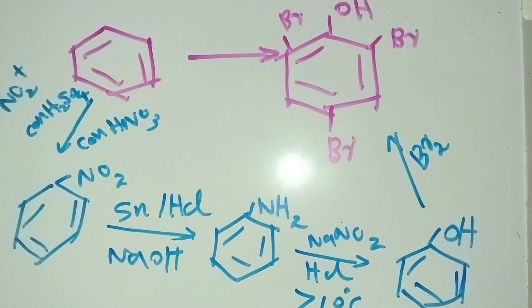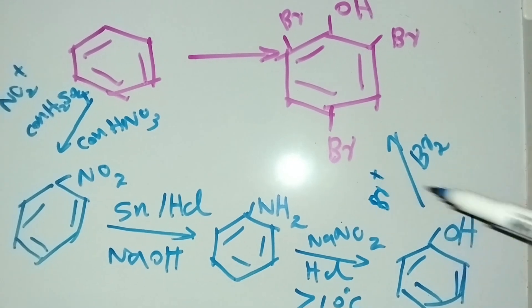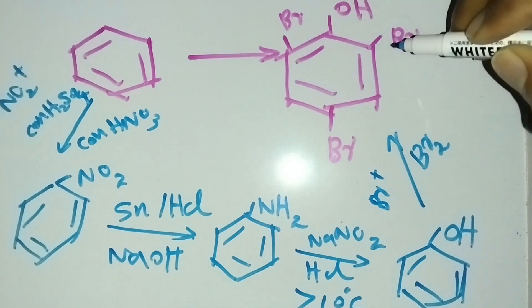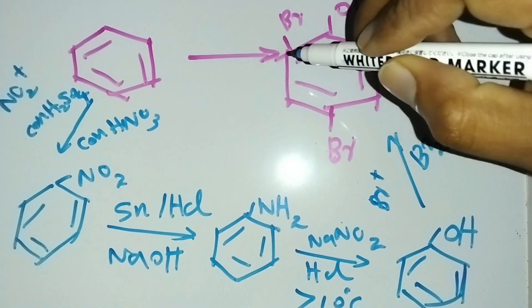Also, we know phenol is a strong ortho-para director, so Br plus electrophile reacts on this to give 2,4,6-tribromophenol.